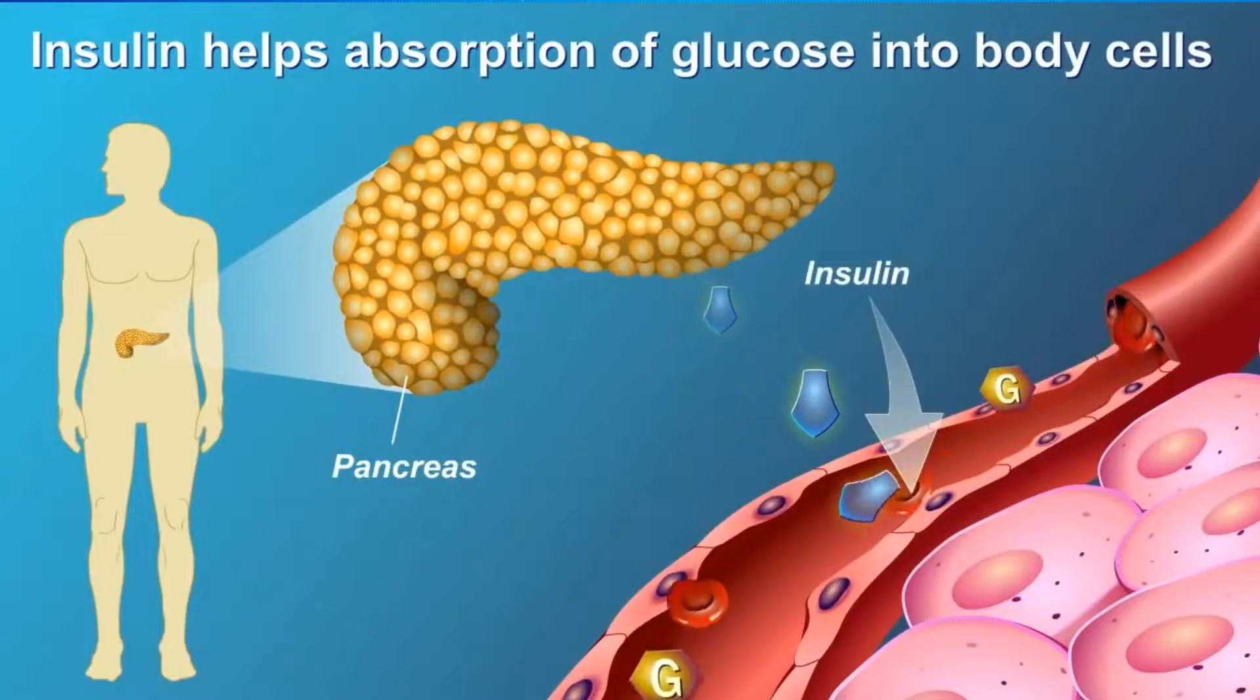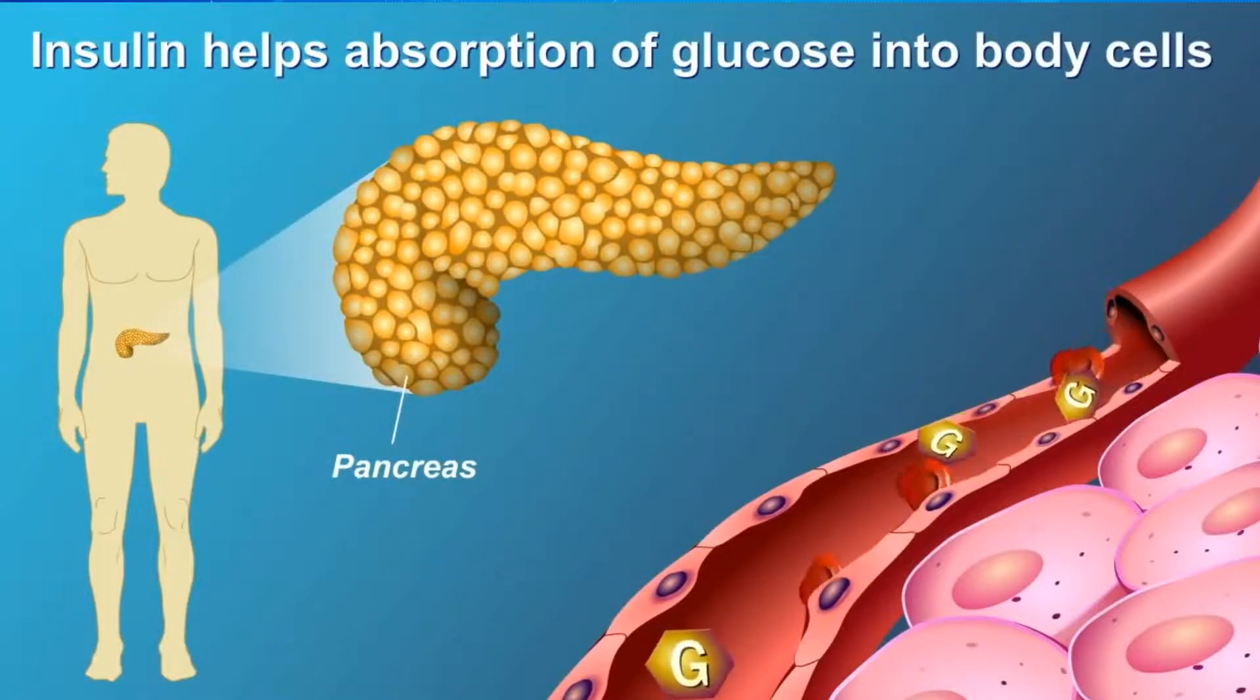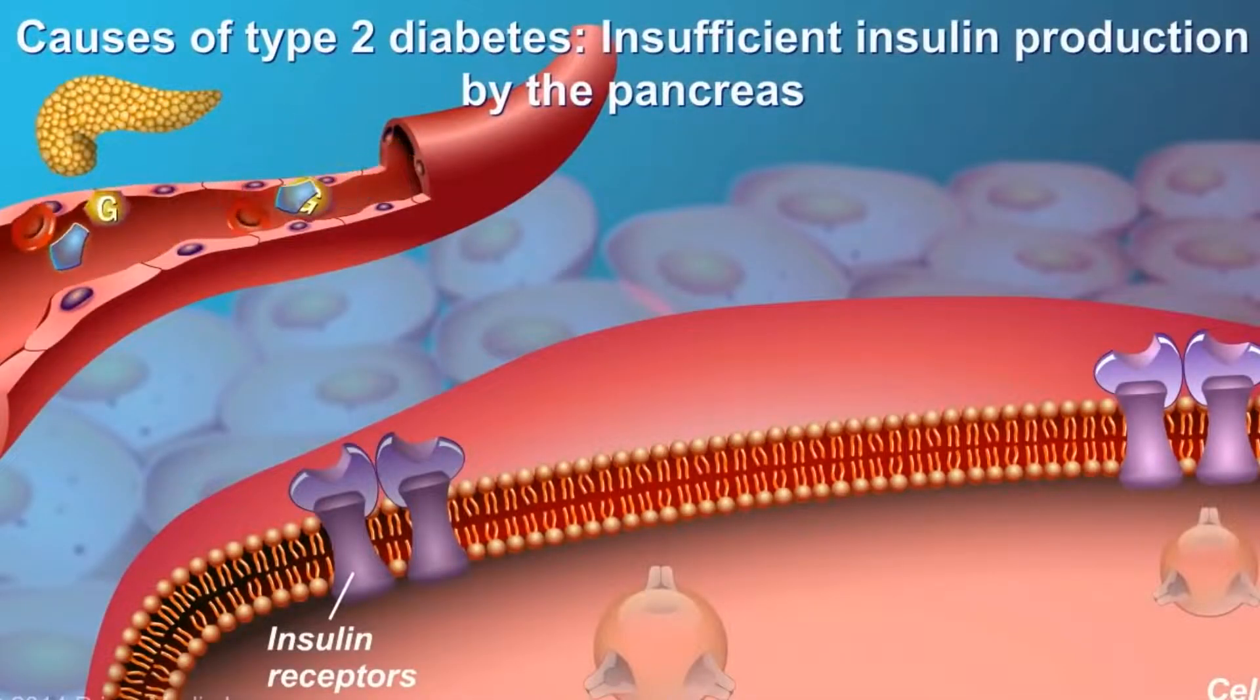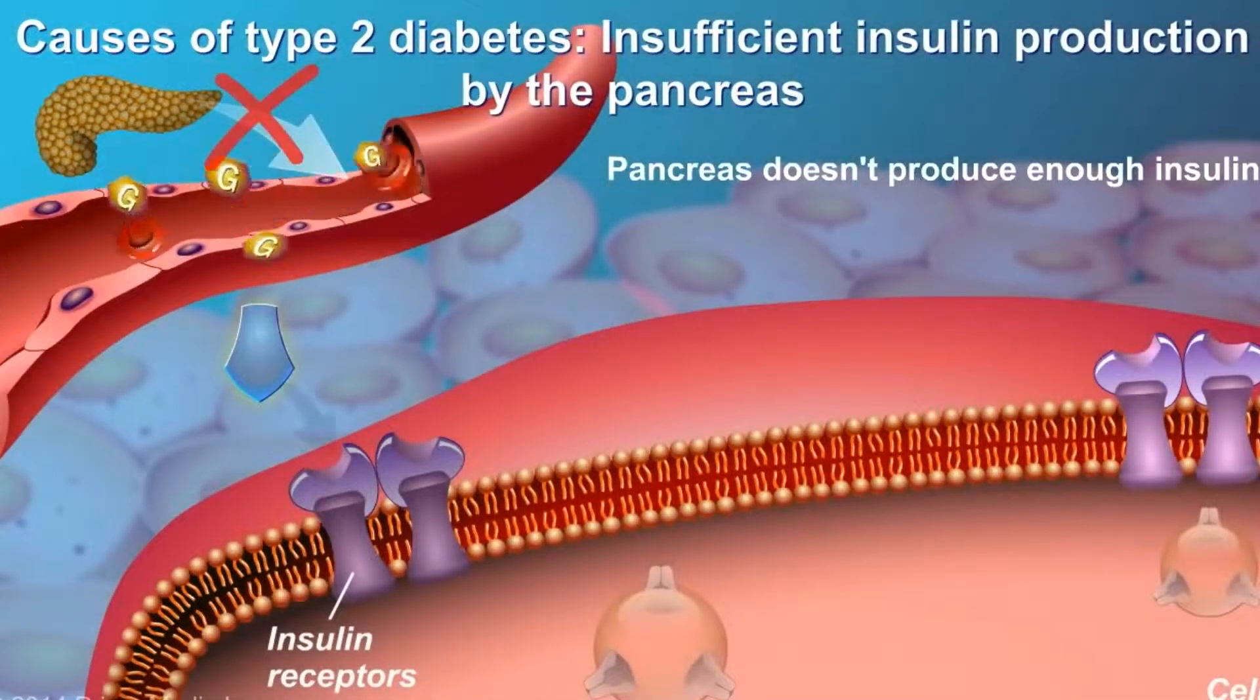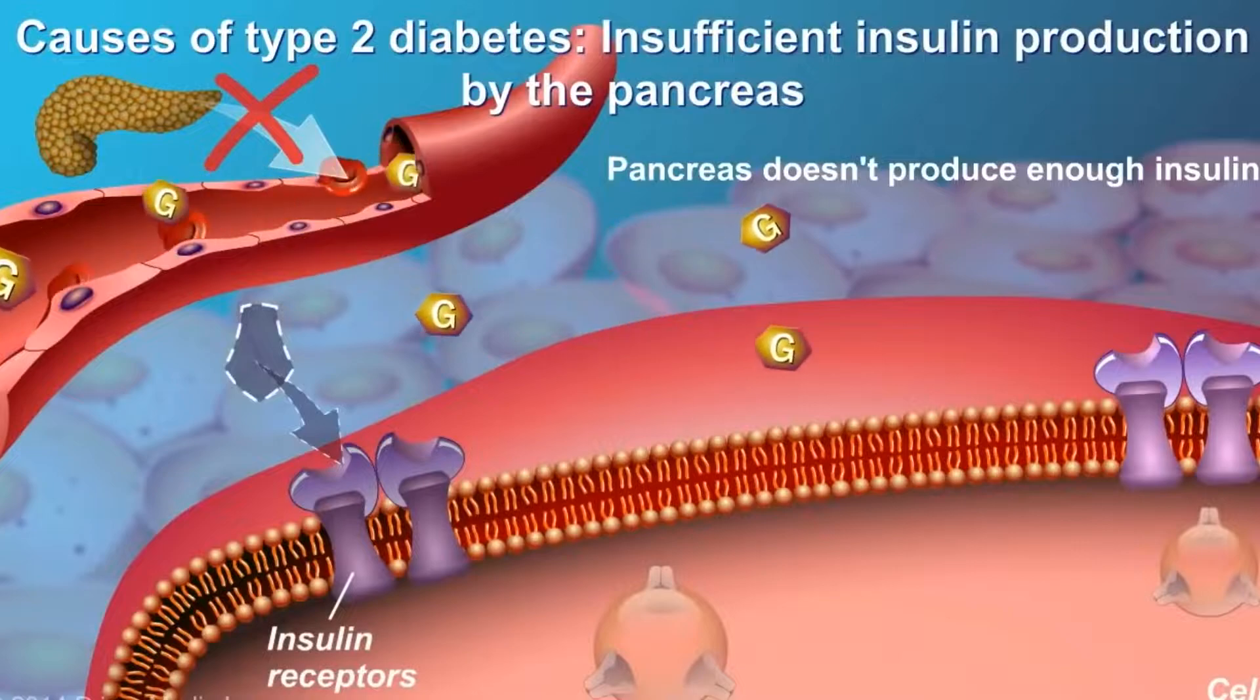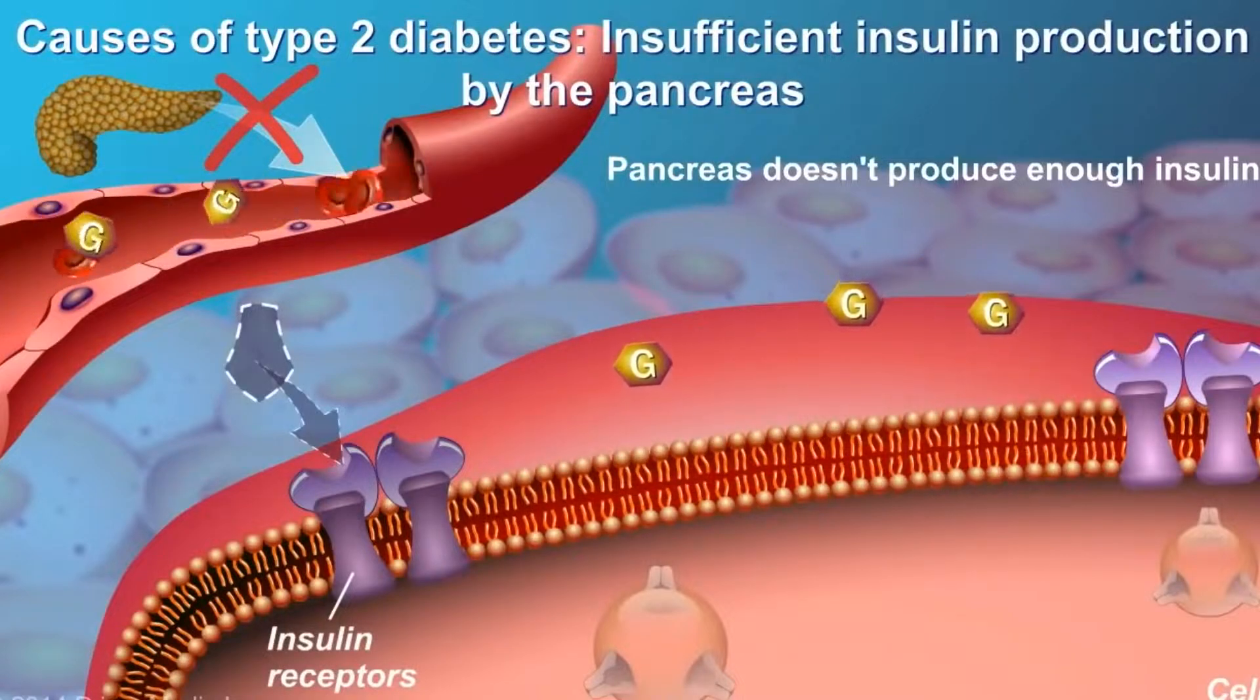Insulin helps get sugar into our cells. A lack of insulin prevents the sugar from getting into our cells which causes both our cells to not have enough energy and causes our blood to have too much, causing the symptoms we associate with diabetes.